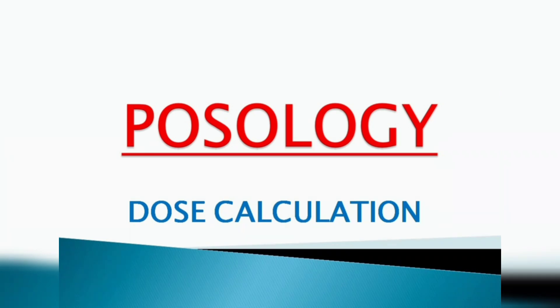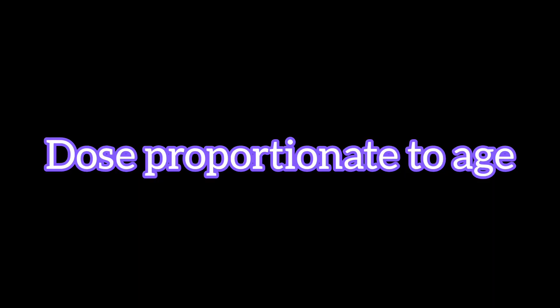In posology, we are going to study dose-based calculations. We are going to study 3 sums in the MRB exam. Let's talk about dose-calculation-based sums. The first one is dose proportionate to age. We are going to study a formula for age to calculate a child's dose. Adult dose is already fixed in the market — for example, 500 mg per kg or 250 mg per kg.